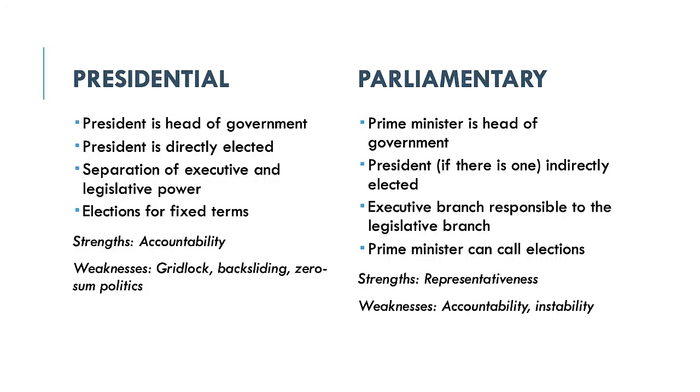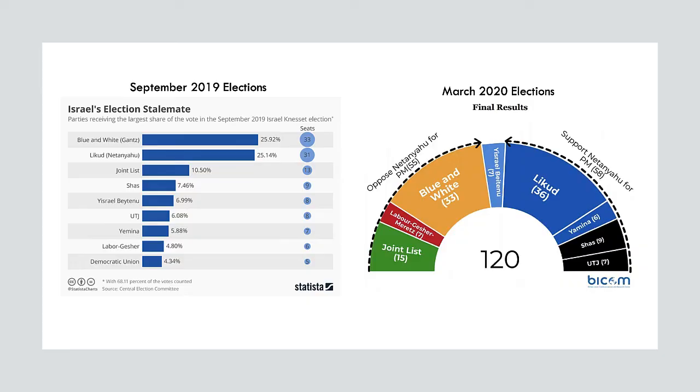The second weakness — and strength frankly — of parliamentary systems is that they are run by coalition governments. This is good for representativeness because a wide range of political views are included in government, but they can also be unstable and weak in accountability. Coalition governments can be short-lived if they are based on convenience as opposed to a more durable agreement. For example, Israel held elections in April 2019, September 2019, and March 2020 in an effort to get a configuration of parties that could form a stable government. In addition, having multiple parties responsible for passing legislation can make it difficult to identify just one party to give credit or blame to if a voter wants to vote retrospectively, based on parties' past performance. These ideas will be further discussed in the reading for this week by Jose Cheibub on presidentialism and parliamentarism.